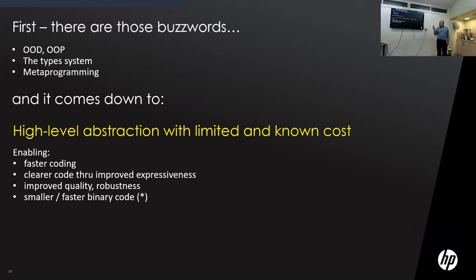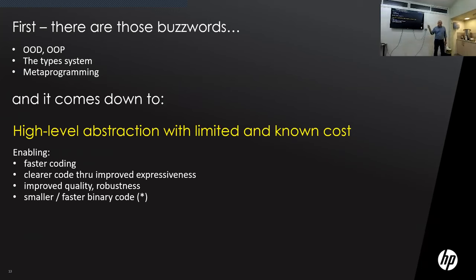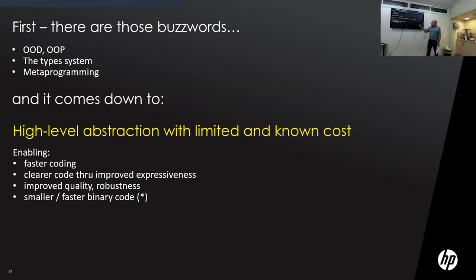What we found is that using C++, we disregard the unfounded fears and unsubstantiated rumors. What we get is high-level abstraction with limited known cost. We get faster coding — writing in an object-oriented system is easier. You get clearer code. You get improved quality. And the nice thing is that if you do your work properly, you'll get smaller and faster binary code.